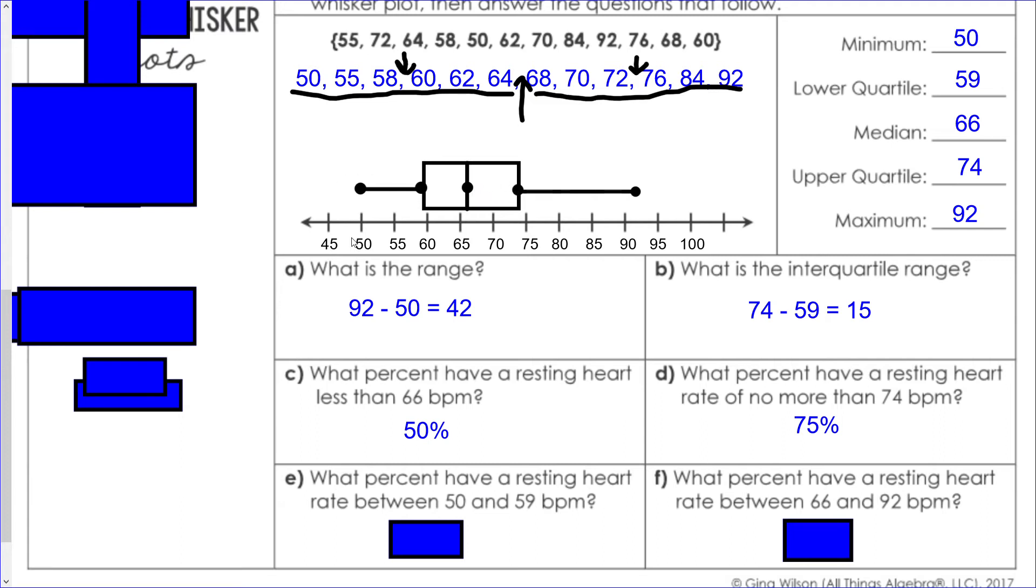What percent have a resting heart rate between 50 and 59? That's between our minimum and our lower quartile, and that's 25 percent. It's very important to note that each of these sections between the dots represents 25 percent or one quarter of our data. It doesn't matter how far apart the dots are, what matters is how many pieces of data we have between them.